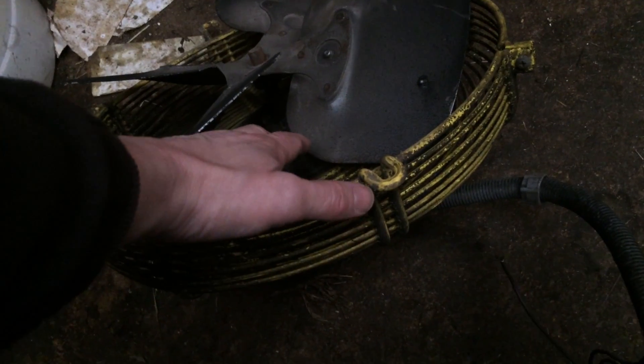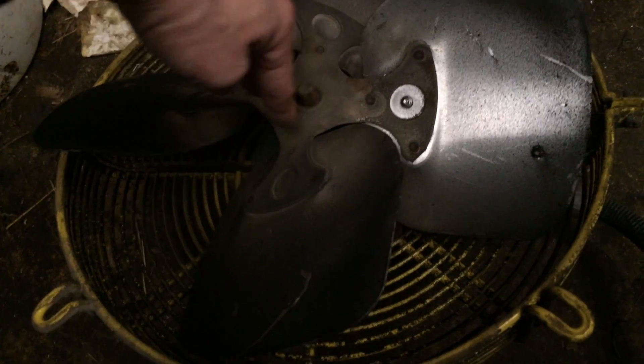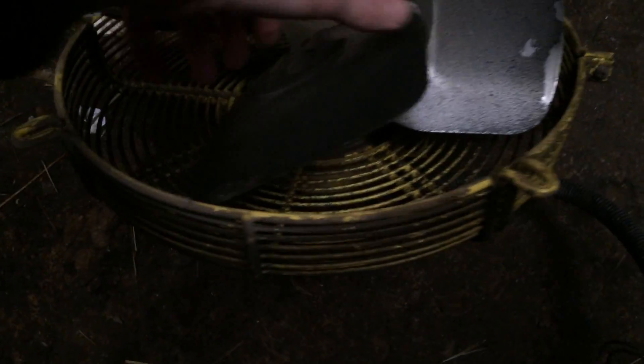Quite often what you get when the bearings go is once you've got the magnetic field in there, it sort of pulls the rotor across to one side and makes it drag. So quite often you can spin them, but not very well by hand, but as soon as you power them up, they seize up solid.